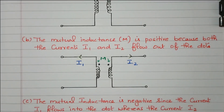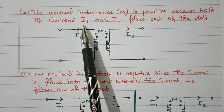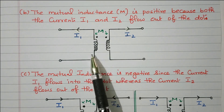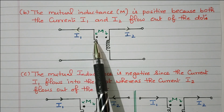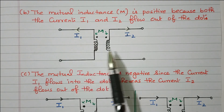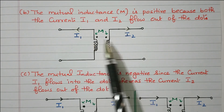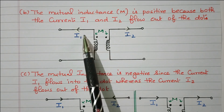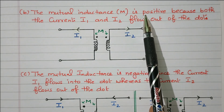The second case: mutual inductance is positive because both currents I1 and I2 flow out of the dotted end. Consider coils L1 and L2. Current I1 in coil one is leaving from the dotted end, and current I2 in coil two is also leaving from the dotted end. Both are leaving. In the previous case both currents entered the dotted end; in this case both currents leave the dotted end. So this case also gives positive mutual inductance.